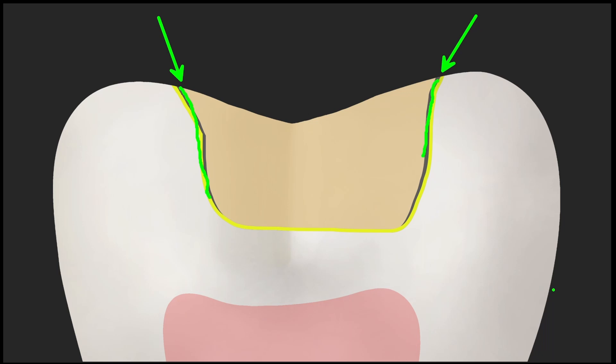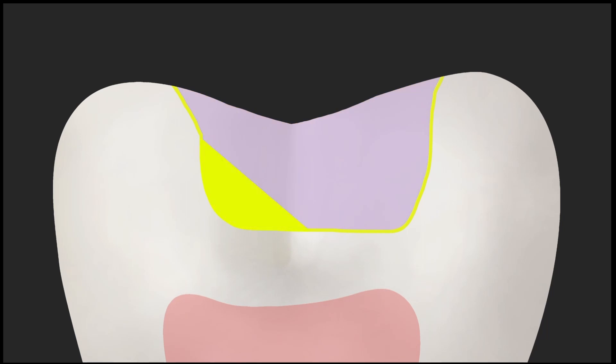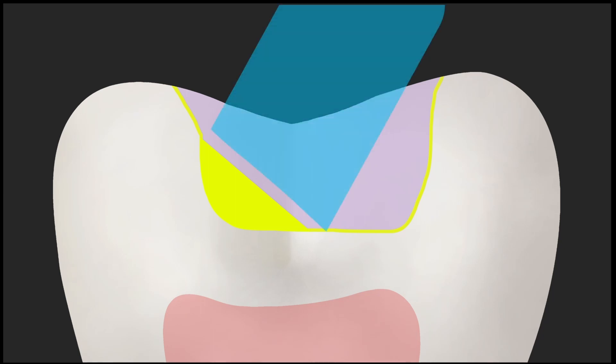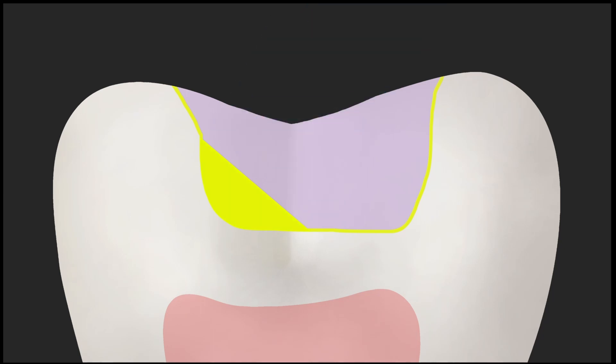How to avoid it? The only way to avoid this gap formation, or to minimize and compensate for polymerization shrinkage, is by incremental layer buildup. Once we add a small increment of composite and light cure it completely, we can then add sequential increments, each light cured one by one.